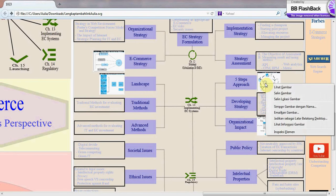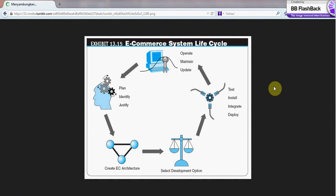Five steps approach. This is the system life cycle in e-commerce. You have to plan, identify, and justify your e-commerce system. Then you create an EC architecture. Then select development options. Then you have to test, install, integrate, deploy, operate, maintain, and update your system so your e-commerce system can work properly.